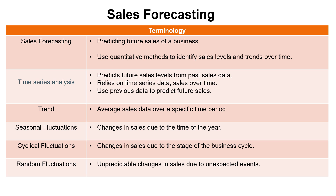Trends are just average sales, and the trend can be used as a performance indicator. If your sales figure achieved is above or below trend, that leads to information for managers to make decisions. There'll be fluctuations from that trend — seasonal, cyclical, and random.